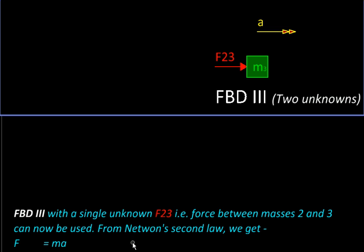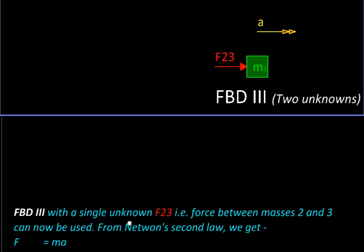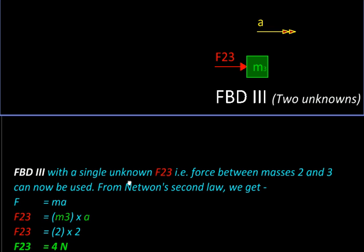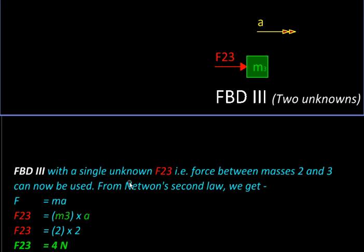So we apply Newton's second law to mass 3. The only unknown here is F23. So we substitute numerical values and solve for F23 to get 4 Newtons as the answer.